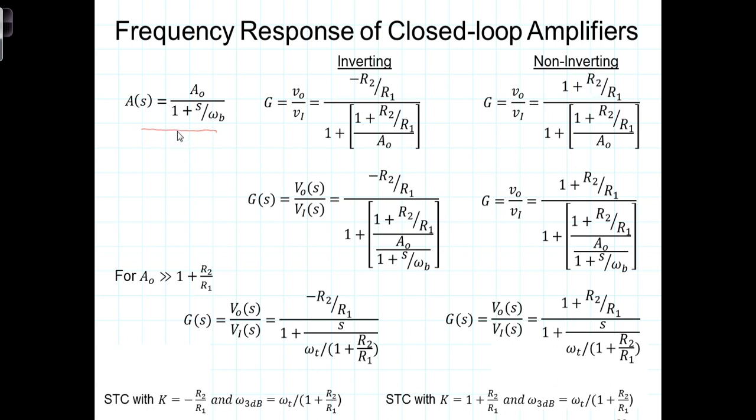So, frequency dependency of A and the dependency of the closed-loop gain when you have a finite open-loop gain, inverting and non-inverting. What we're going to do is take this frequency dependency and insert it into this closed-loop gain expression for both. Let's just do it for the inverting, and then we'll say you can do the same thing for the non-inverting. In place of A0, we're going to write this expression right here.